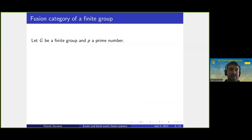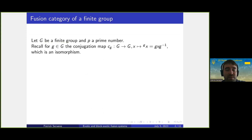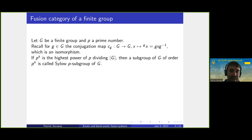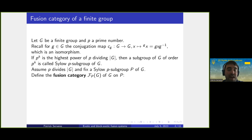I'm going to start with the most hands-on example of a fusion system: the fusion category of a finite group. We take G to be a finite group and p a prime number. If p to the k is the highest power of p dividing the group order |G|, then a subgroup of this order is called a Sylow p-subgroup of G. We fix a Sylow p-subgroup P of G.